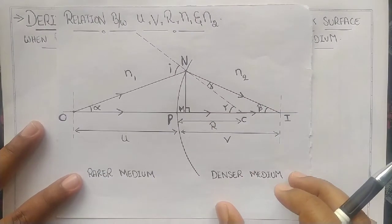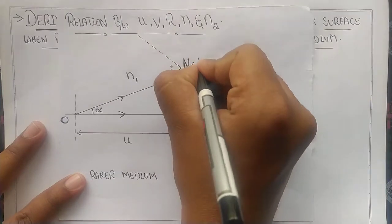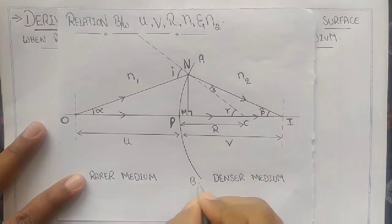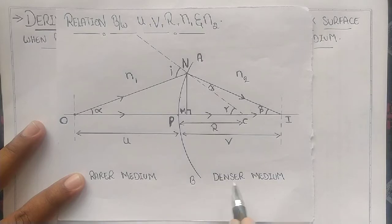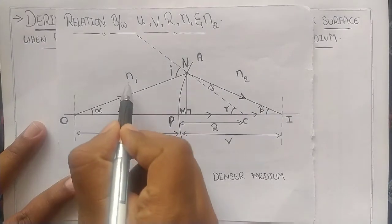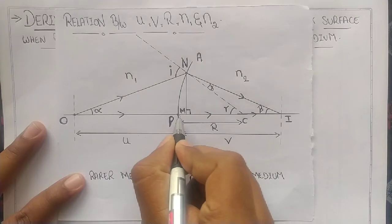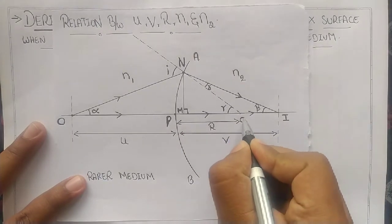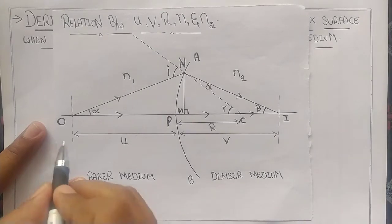This is the diagram. Let me explain the diagram. Let me mark A, P, and B. APB is a convex refracting surface which separates rarer medium and denser medium. The rarer medium has refractive index N1 and denser has N2. Let P be the pole, the center of this surface, and C is the center of curvature. This is the radius of curvature.